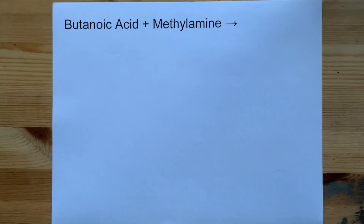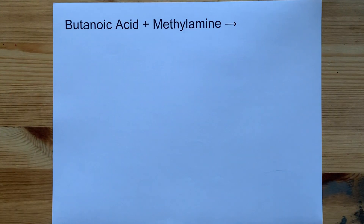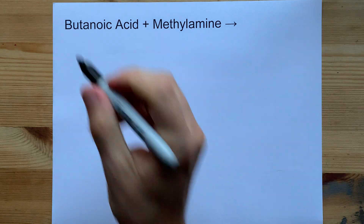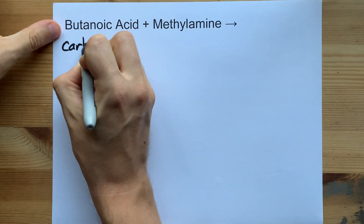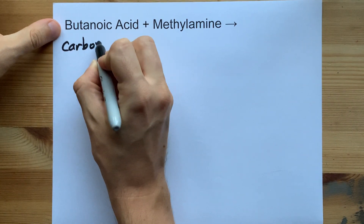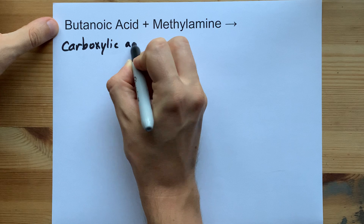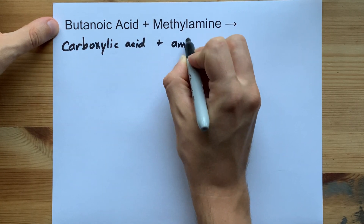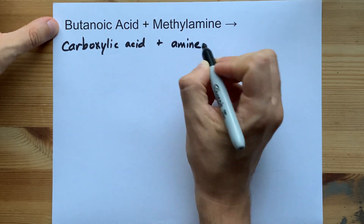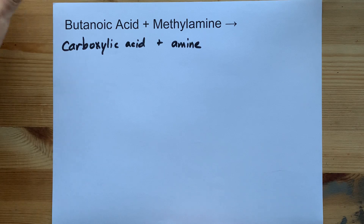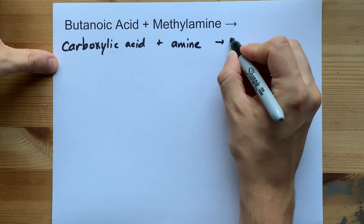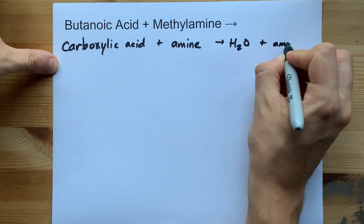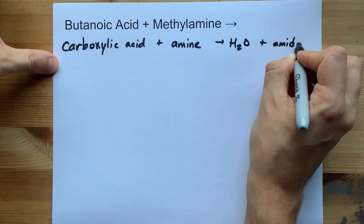What happens when butanoic acid reacts with methylamine, or really any amine for that matter? A carboxylic acid plus any kind of amine — well, not a tertiary amine — is generally going to give you water plus something called an amide.